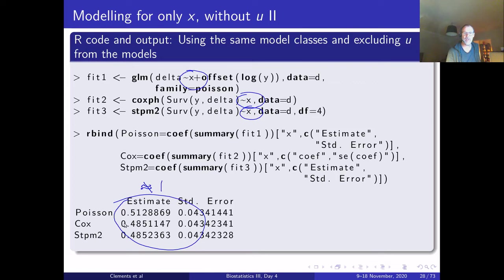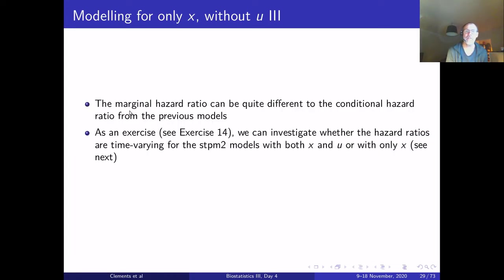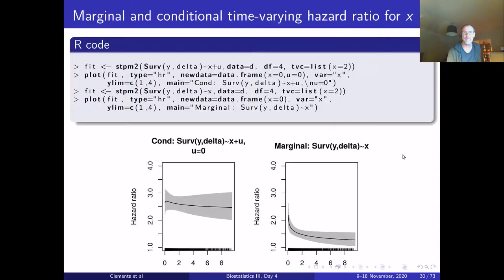The marginal hazard ratios are about half of what we would expect — quite different from the conditional hazard ratios from the previous models. As an exercise (exercise 14), we can investigate whether the hazard ratios are time-varying for the stpm2 models fitted with both x and u, or with only x.